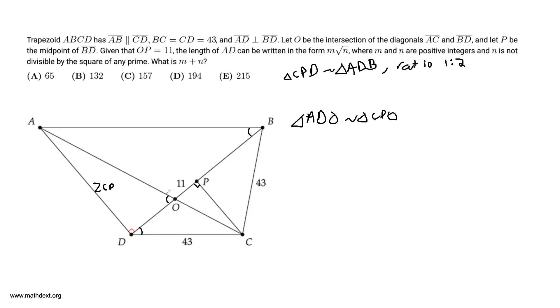We do this using angle-angle similarity again. This one's a bit easier because this angle over here is equal to this angle over here, and this angle is equal to this angle because both of them are 90 degrees. Therefore, triangle ADO and triangle CPO are similar.